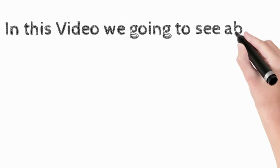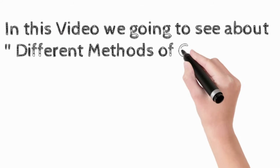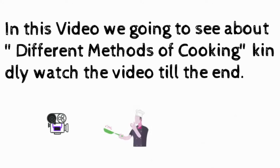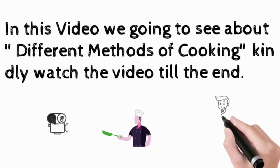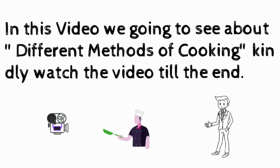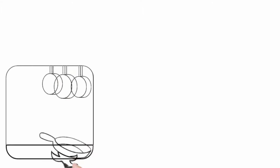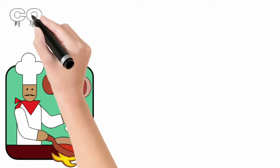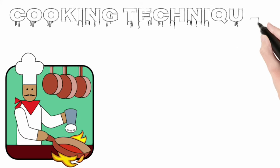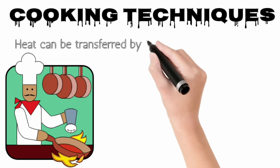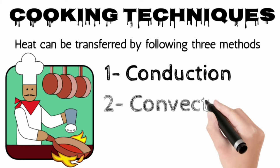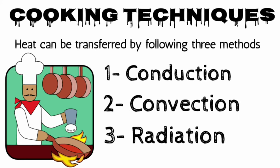In this video we're going to see different methods of cooking. Cooking techniques: heat can be transferred by the following three methods, and two or three of these methods may be combined as well. One: conduction. Two: convection. Three: radiation. Let's discuss more in detail in the upcoming slides.